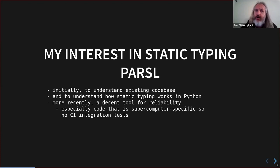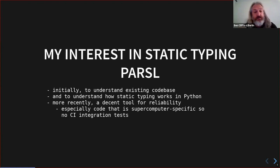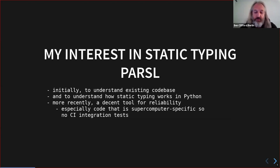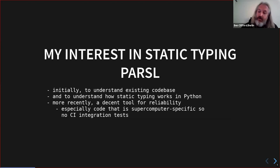I'd also seen on a different project that there was some static typing starting to happen for Python, so I wanted to investigate how that worked. As time has passed this has turned into a pretty decent tool for reliability — for finding problems before they hit our end users. Some of our code is specific to running on specific supercomputers, so our CI doesn't run integration tests for that. Without static checking there would basically be no checking at all about what's happening.